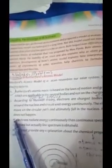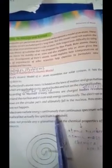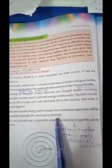Next, number 3. If electrons radiate energy continuously, then continuous spectrum will be obtained. But actually, line spectrum is obtained. Now, let's start with it now.